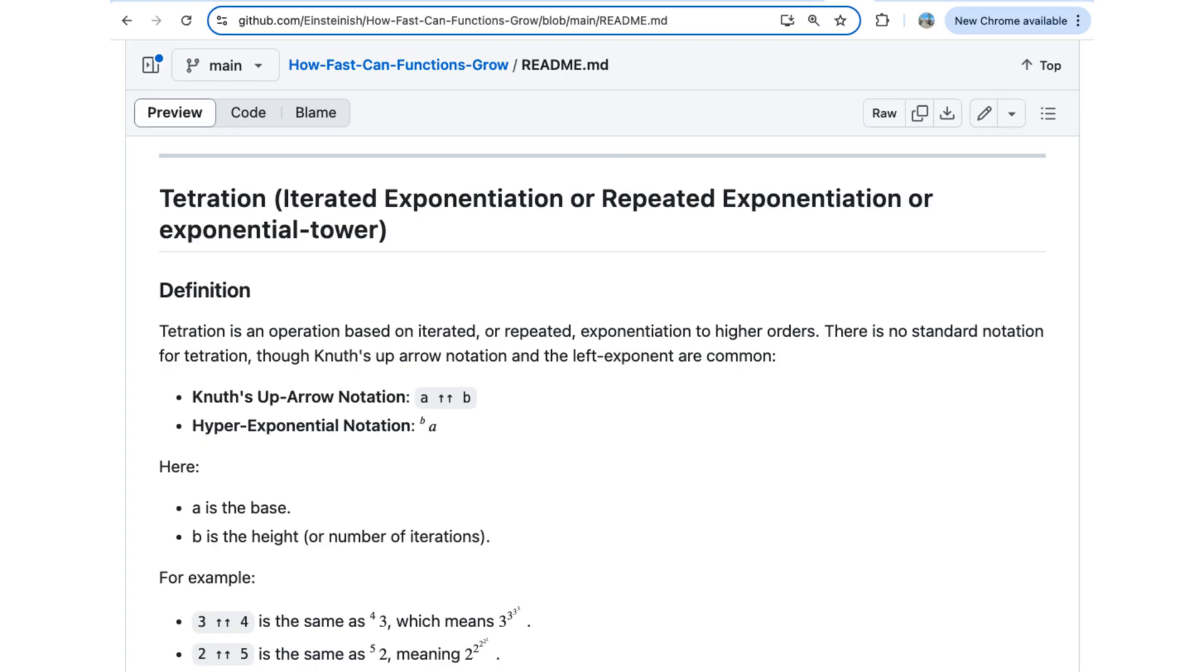Our next function is tetration. It has several names, such as iterated exponentiation or repeated exponentiation or exponential tower. Tetration is an operation based on iterated or repeated exponentiation to higher orders. There is no standard notation for tetration.